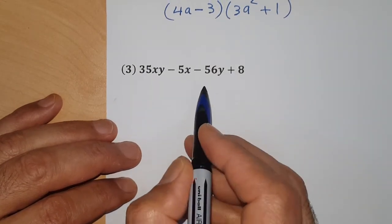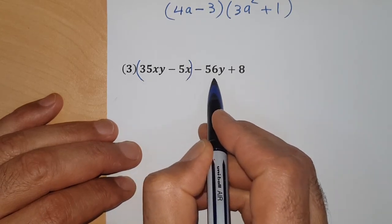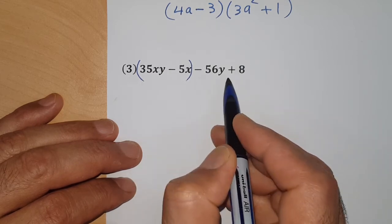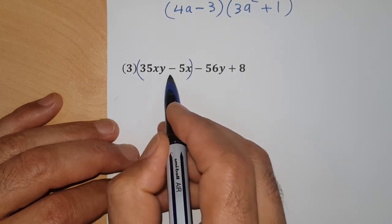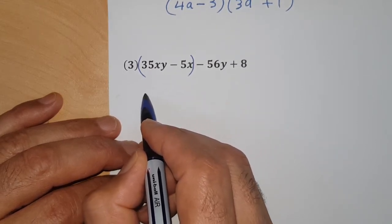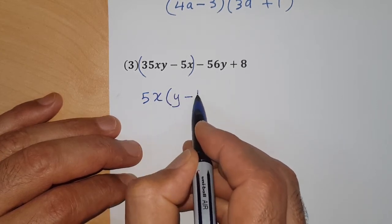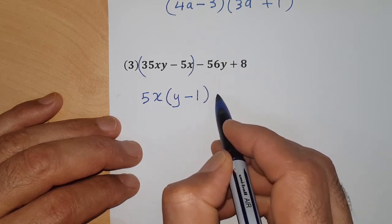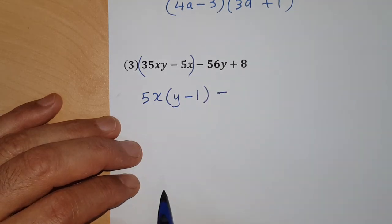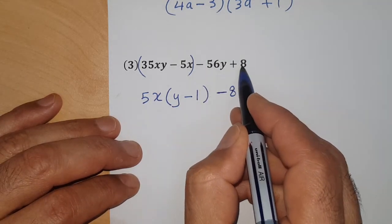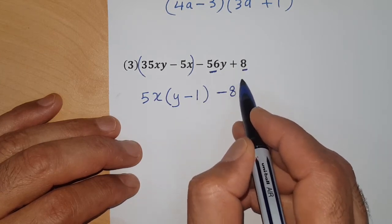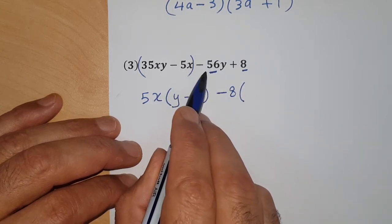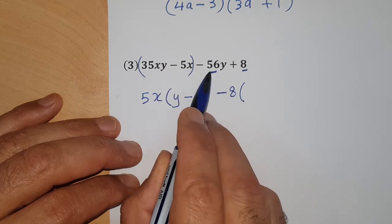Next: 35xy - 5x - 56y + 8. Group the first two and last two terms. Since the last two terms involve a negative, I'll take a negative common factor outside. 56 and 8 are both divisible by 8, so take out negative 8. When you take the negative outside, the sign inside flips — no need to keep the negative inside.